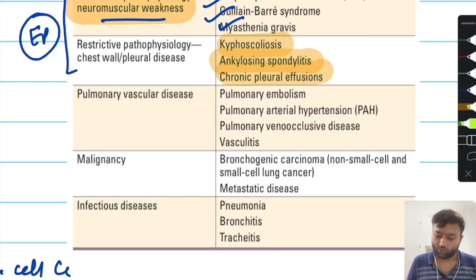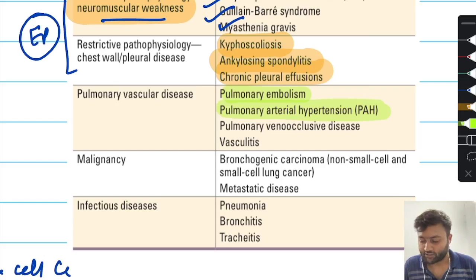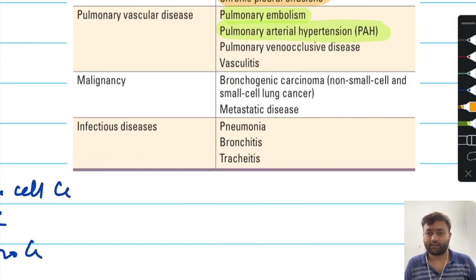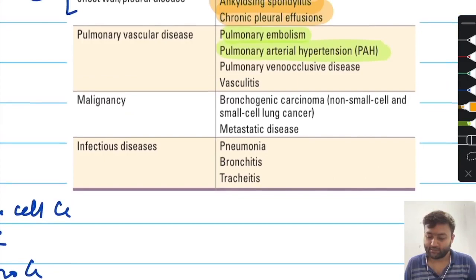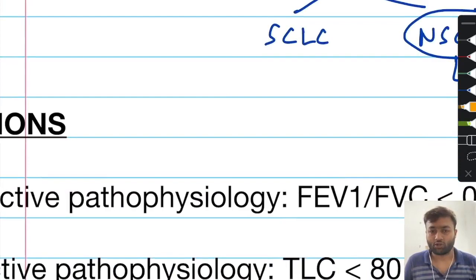In pulmonary vascular diseases, you should remember two important disorders: pulmonary embolism and pulmonary arterial hypertension. For malignancy, the most important is bronchogenic carcinoma, and for infectious disease, you should mainly remember pneumonia.